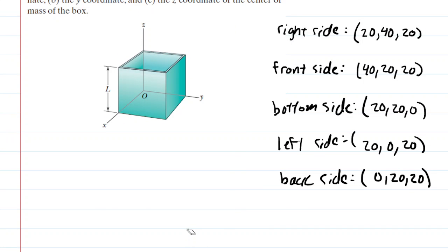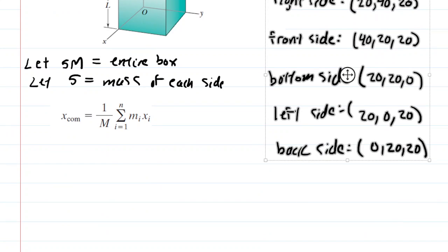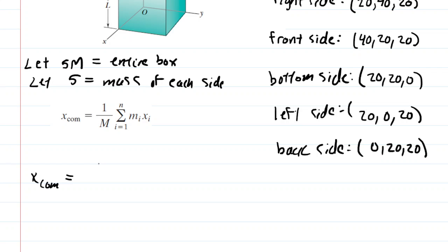Let's start with the X-coordinate of the center of mass. Here is the equation — it looks a little intimidating. We let the mass of the entire box be 5m, since we've divided the box into five pieces of equal mass, so m is the mass of each side. We have 1 divided by 5m, and then we multiply by the summation — taking the mass of each side and multiplying it by the X-coordinate of its center of mass.